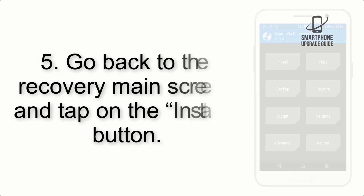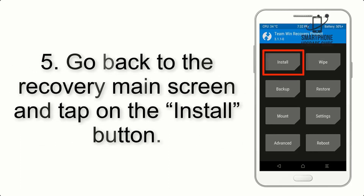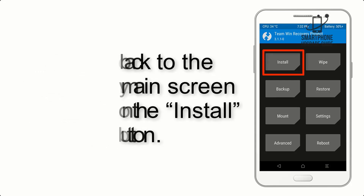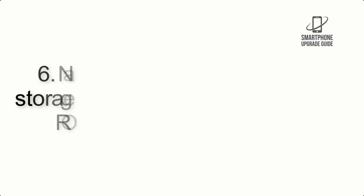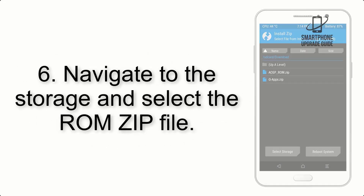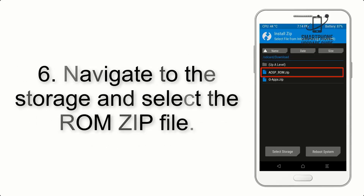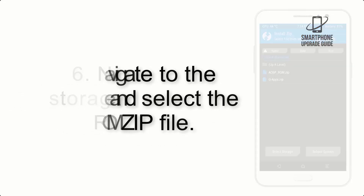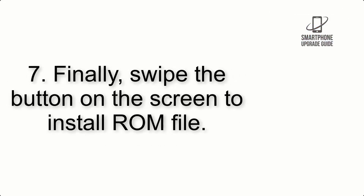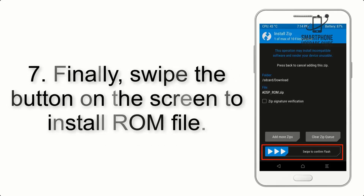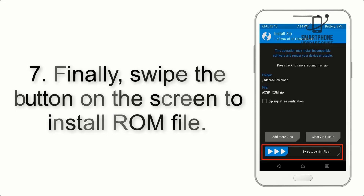Step 5: Go back to the recovery main screen and tap on the Install button. Step 6: Navigate to the storage and select the ROM zip file. Step 7: Swipe the button on the screen to install the ROM file.